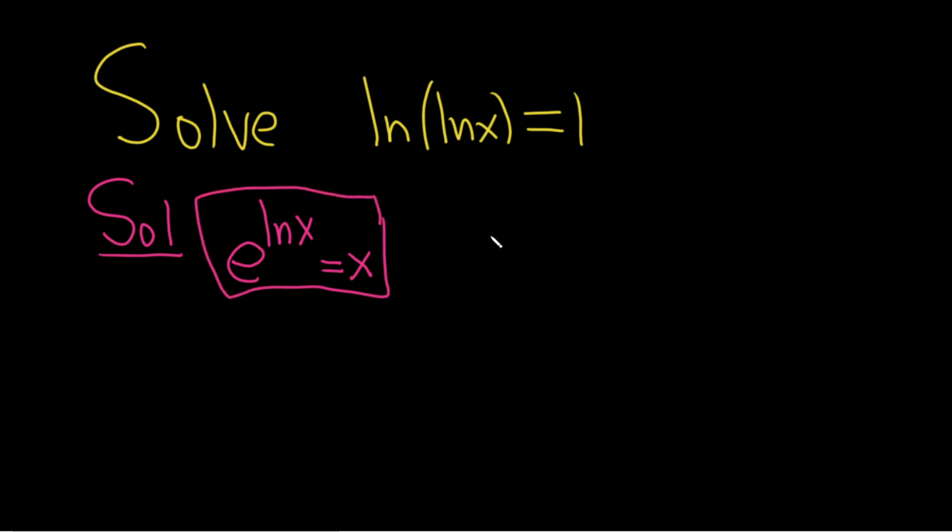So I'll start by writing down the original equation one more time. This is the natural log of the natural log of x, and it's equal to 1. So we're missing the e here. So what we'll do is we'll put one here, and we'll put one here. This process is called exponentiation. We are exponentiating both sides of this equation.